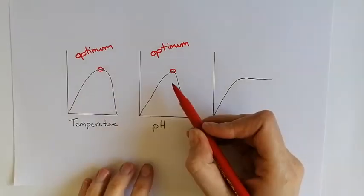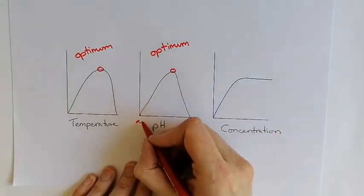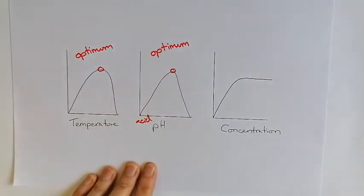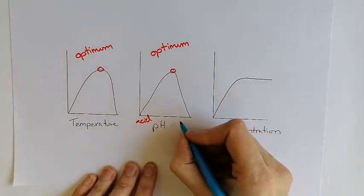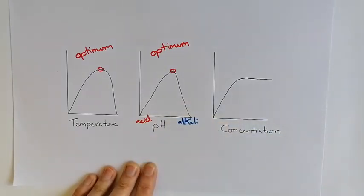For pH, if the pH is too low, remember that means acid if it's a low pH, or if the pH is too high, so that would be an alkali side, then your enzyme will not work.